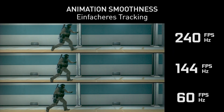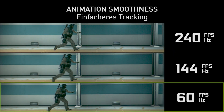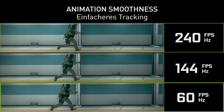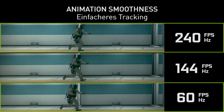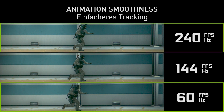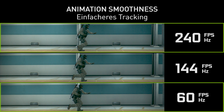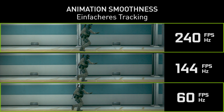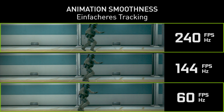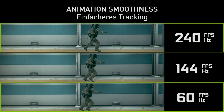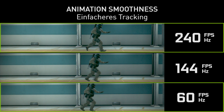Looking at the top and bottom comparison, you can see that 60 frame and 240 frame rate video have a very different feel in terms of smoothness. The 60fps video has much larger animation steps, making it feel much less smooth than the 240 frames per second video.